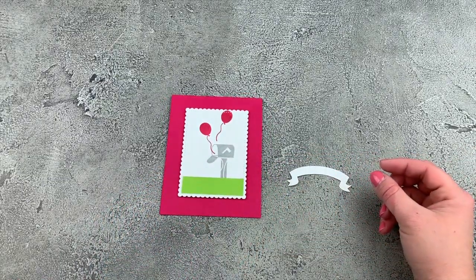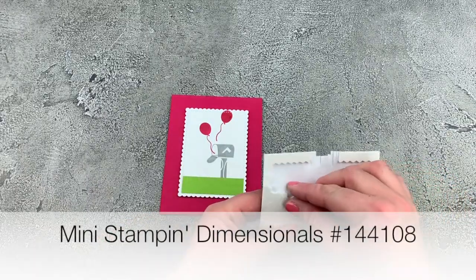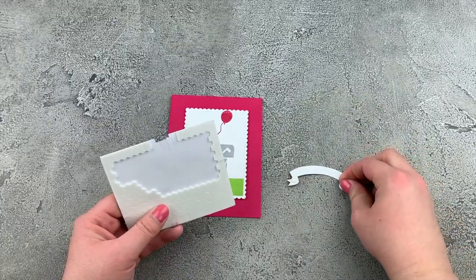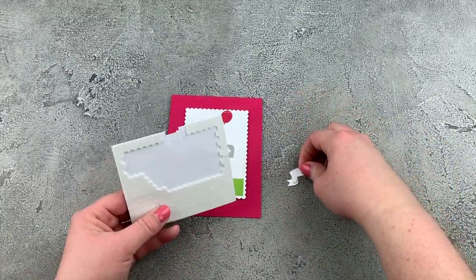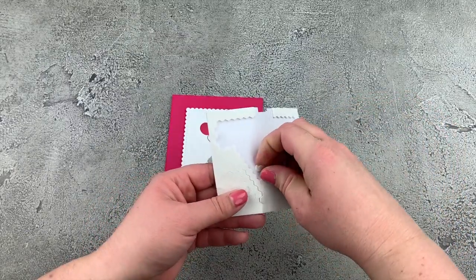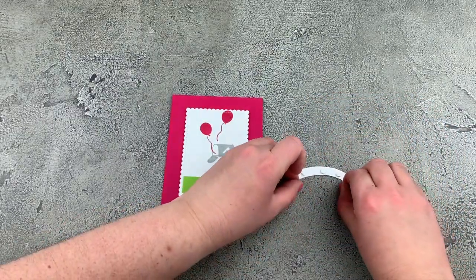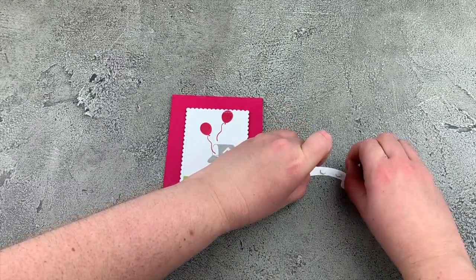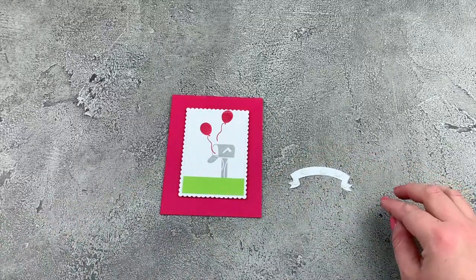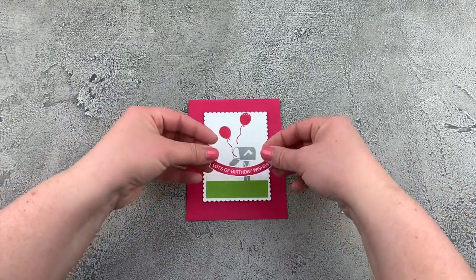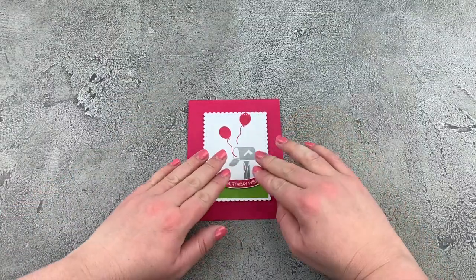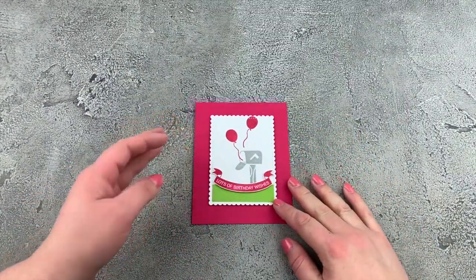And then I'm going to take my mini Stampin Dimensionals. So these are just a smaller version of those adhesive pieces that I just used on the back of there. So they're perfectly sized for smaller projects or smaller pieces. So we'll take those backings off. And we're going to add this right sort of down into the grass and by our mailbox.